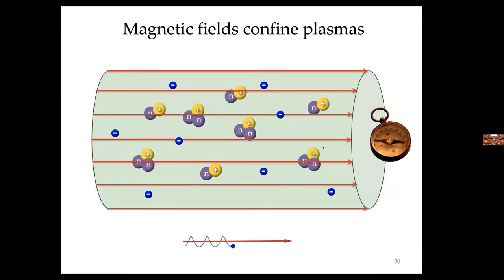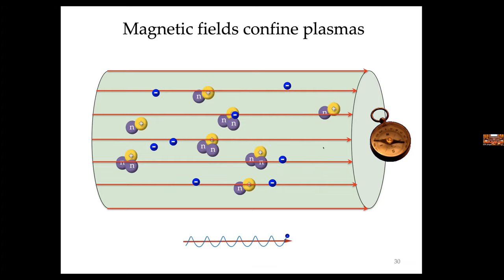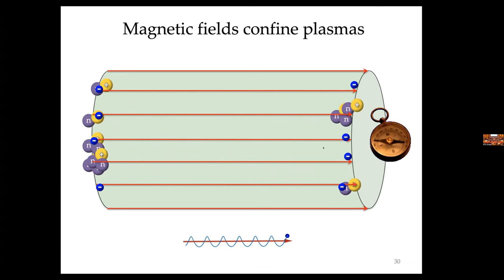With a magnetic field pointing to the right, particles in the plasma undergo helical trajectories around the magnetic field. Along a magnetic field, no work is being done — as the Lorentz force tells us. So what happens is the plasma starts encircling the magnetic field lines. But we still have a problem: we avoided contact in the up-down direction, but the particles still make contact with the surface at the left and right ends.